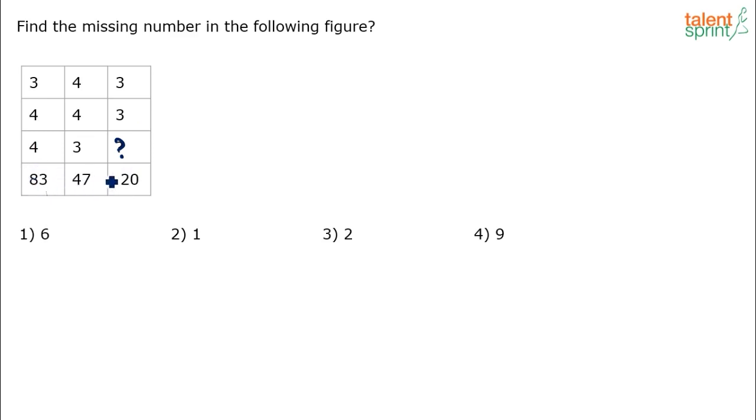You have to try and understand in which sequence are the operations being done. Are the operations being done vertically or horizontally? Now when I look at the numbers here, clearly if you see the last row has got very big values: eighty three, forty seven, and twenty, compared to the other values here. So I am sure that there is some operation which is being done in this fashion to arrive at this number. We do something on three, four, and four to get eighty three. Four, four, and three to get forty seven. And three, three, and whatever question mark to get twenty.